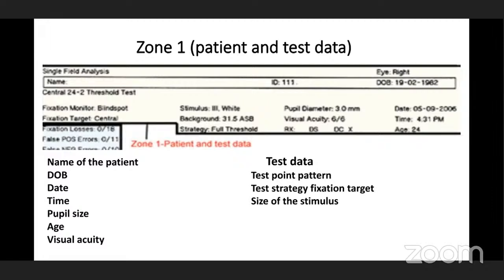In test data, we have the test point pattern — whether it is 30-2 or 24-2 — and test strategies, such as SITA fast or SITA standard. We also have the size of the stimulus, which should be size three. If there is poor retinal sensitivity, we can switch to stimulus size four or five.